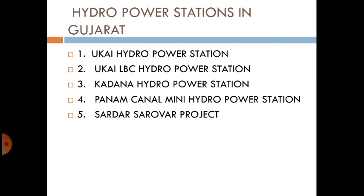Gujarat's largest power station is the Sardar Sarovar Project, built on the Narmada river. It is the world's 30th largest dam. The project has two hydro power stations: a river bed powerhouse of 1200 MW and a canal head powerhouse of 800 MW plus 250 MW. From the electricity produced at Sardar Sarovar, 57% goes to Madhya Pradesh and 27% goes to Maharashtra.